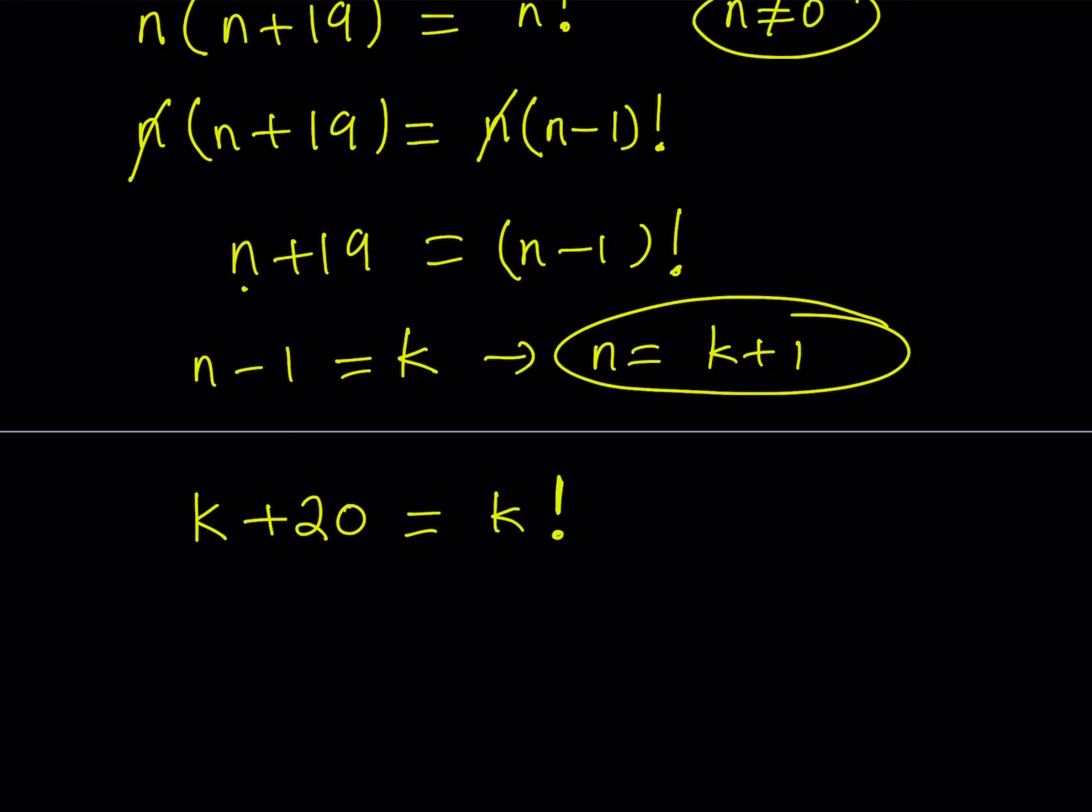It's nice to be able to get something as simple as k factorial on the right-hand side. So how do we deal with these kinds of equations? This is a non-standard equation because we have a factorial on the right-hand side and a linear function on the left-hand side.